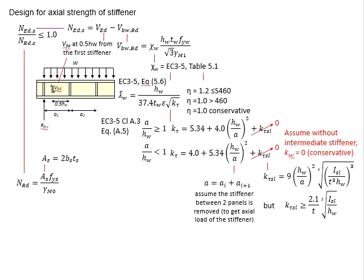This slide outlines the design step used to check for the axial strength of the stiffener. The actual load acting on the stiffener is to be checked against its resistance. The resistance needs to be greater than the load so that the ratio should be less than 1.0, and it is to be considered a pass if the ratio is less than 1.0.